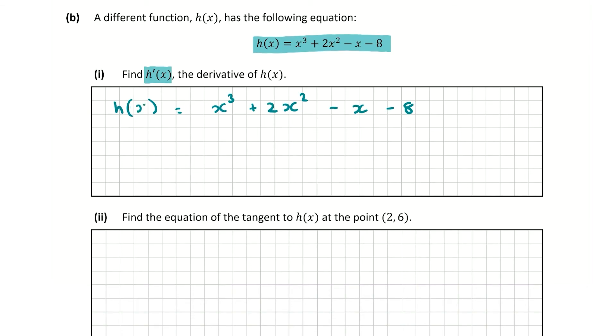Now h'(x), the derivative of h(x). For x³, we bring down the power 3x and then reduce the power by 1. Again bring down the power, multiply it by the coefficient. So it's 2 by 2 which is 4x, and then reduce the power by 1. So it's to the power of 1, so we just leave it. The power here is just 1, so we bring that down here.